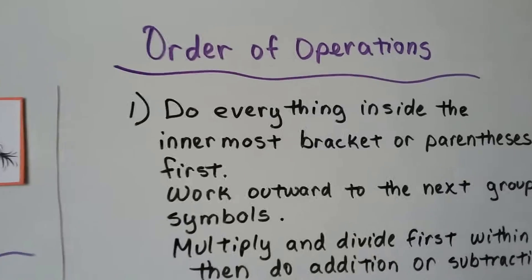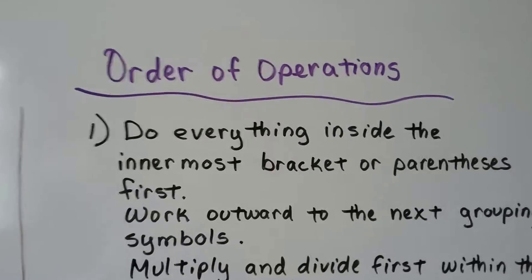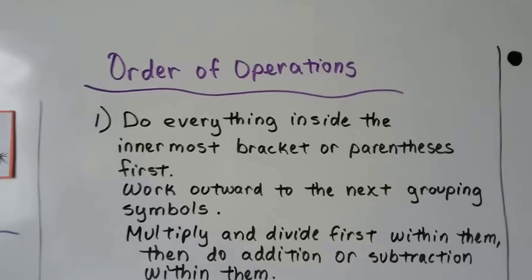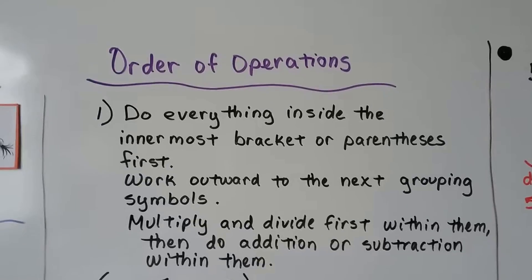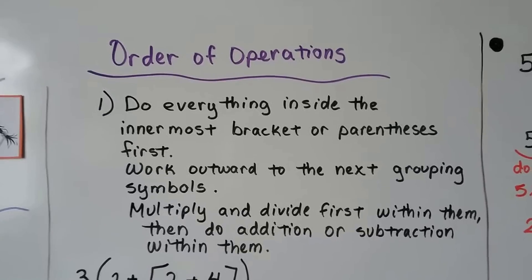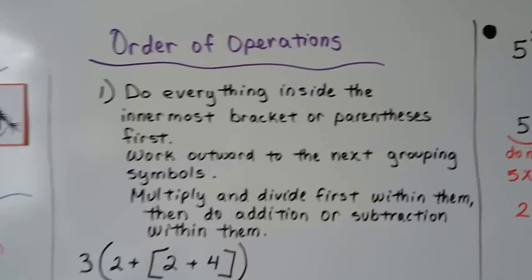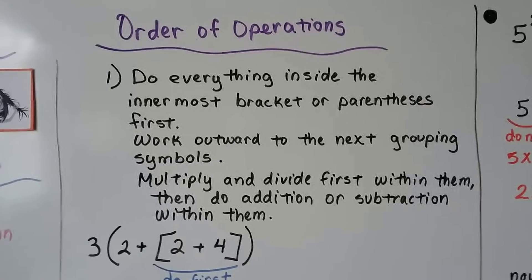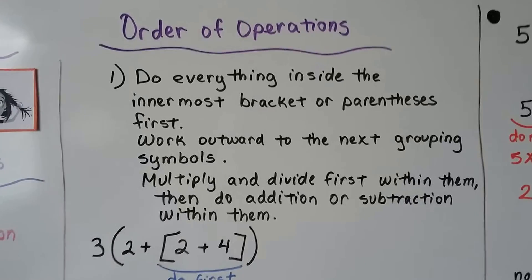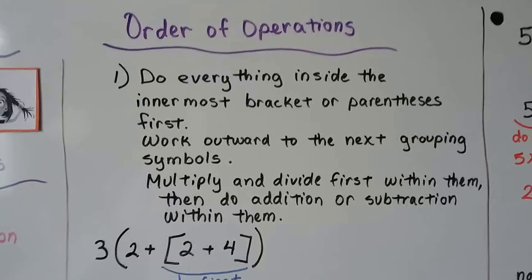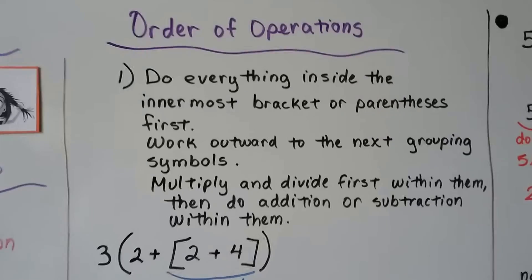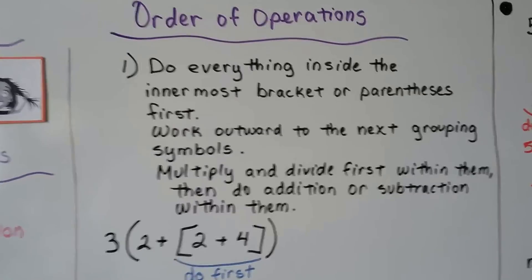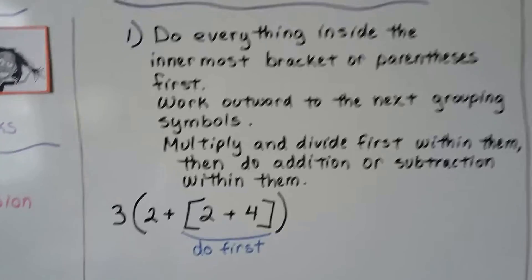The order of operations says to do everything inside the innermost brackets or parentheses first, and we work outward to the next grouping symbols. We multiply and divide first within them, then do addition or subtraction within them. We're going to ignore everything on the outside of the brackets or parentheses until we've handled the inside.